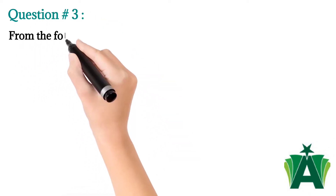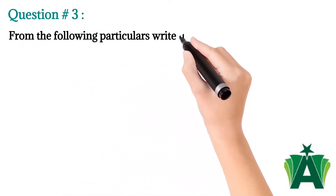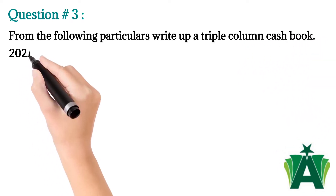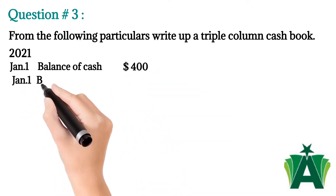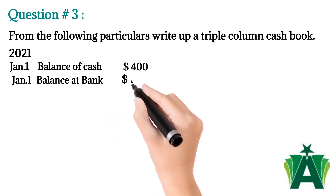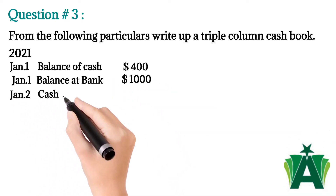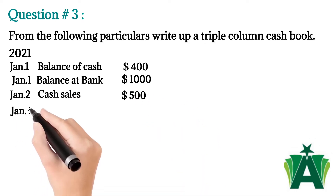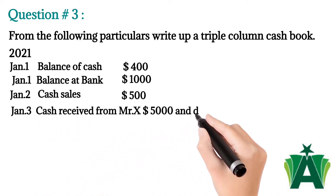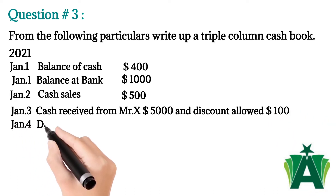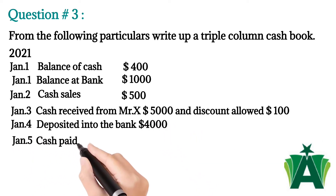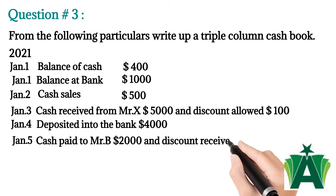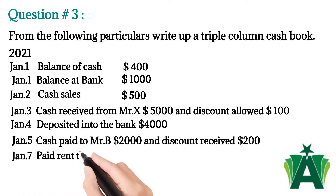Question number three: from the following particulars, write up a triple column cash book. January 1st: balance of cash $400 and balance at bank $1,000. January 2nd: cash sales $500. January 3rd: cash received from Mr. X $5,000 and discount allowed $100. January 4th: deposited into the bank $4,000. January 5th: cash paid to Mr. B $2,000 and discount received $200. January 7th: paid rent through a check $1,000.